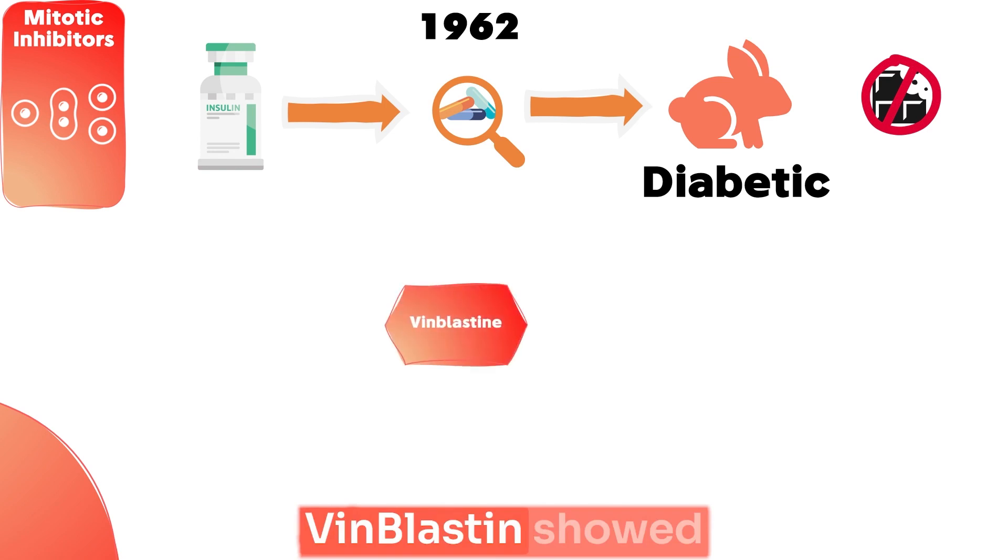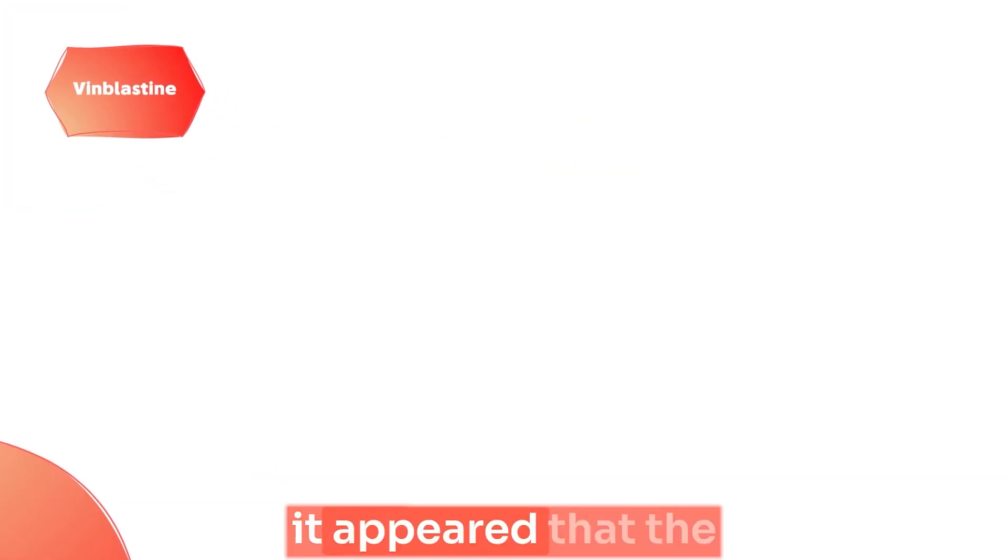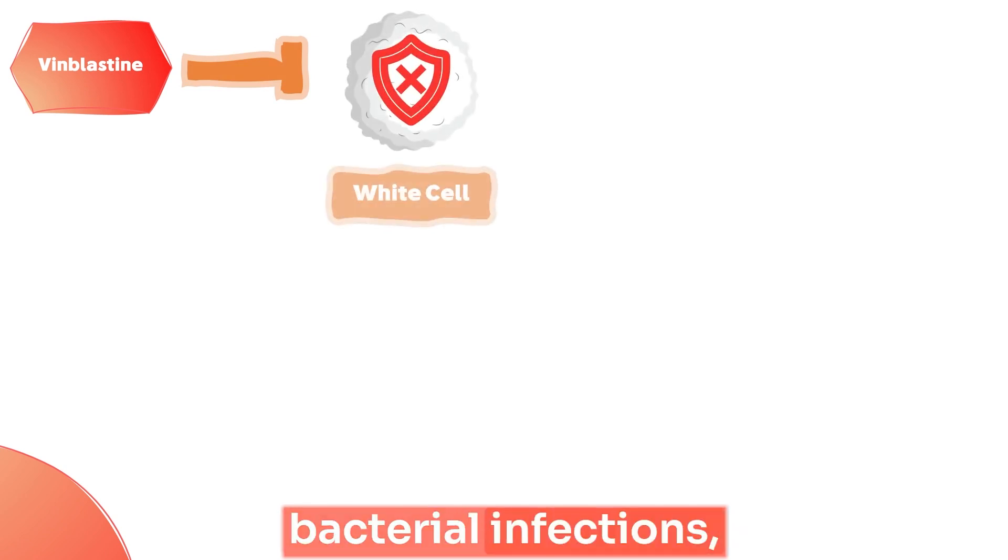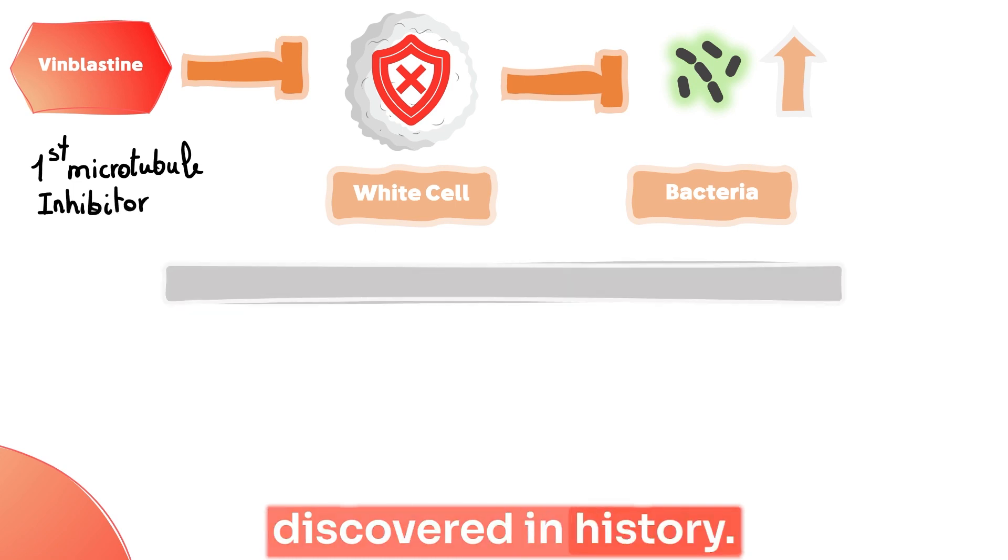A drug called vinblastin showed unexpected results. It exposed the rabbit to bacterial infections. After investigation, it appeared that the drug was cytotoxic for the fast-dividing white blood cells and exposed the rabbit to bacterial infections. And most importantly, it was the first microtubule inhibitor discovered in history.